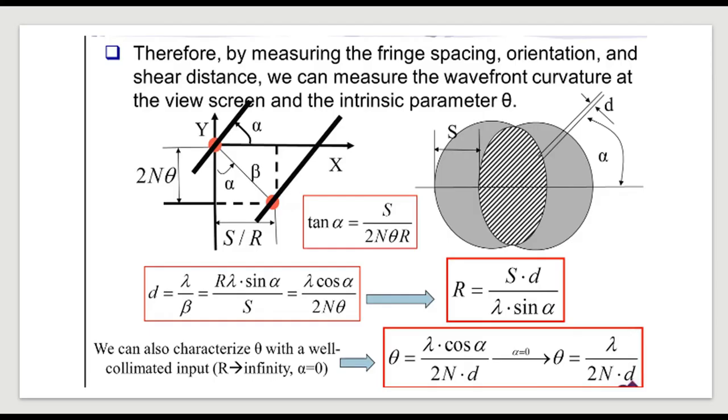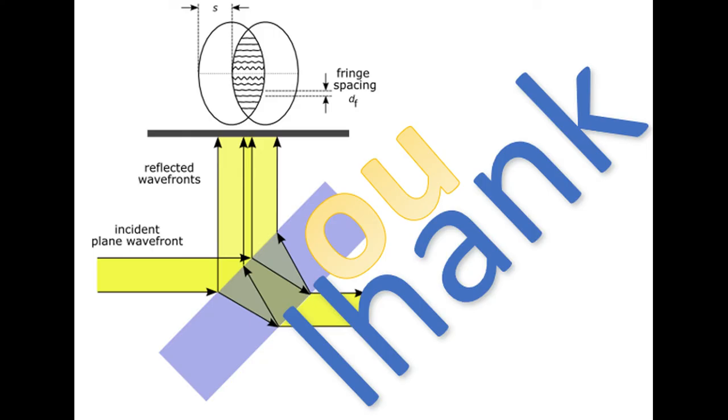Overall, the take home message is that as long as you are able to measure the shear distance, the fringe spacing D, and the deviation angle alpha of the fringe, then you can figure out the radius of curvature of the passing wavefront and even focal lengths of the lenses and mirrors. Thanks for listening!